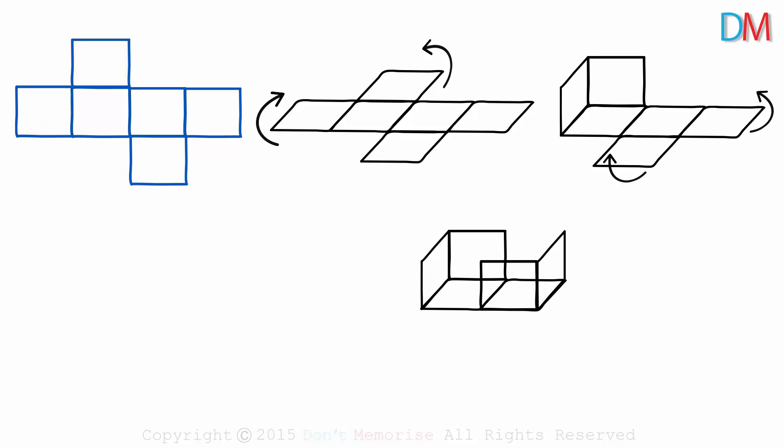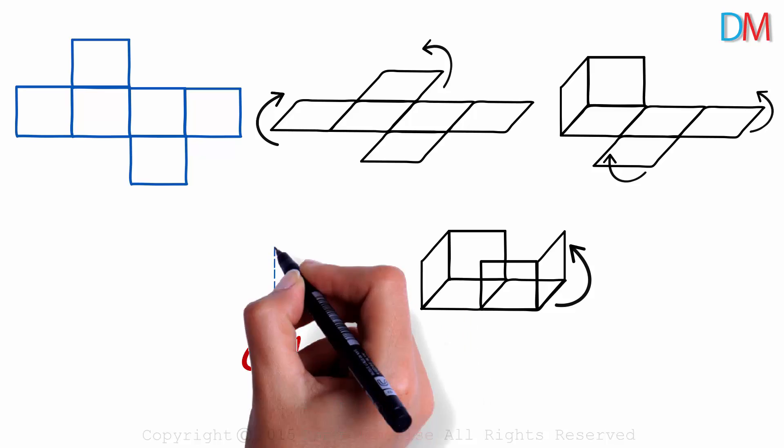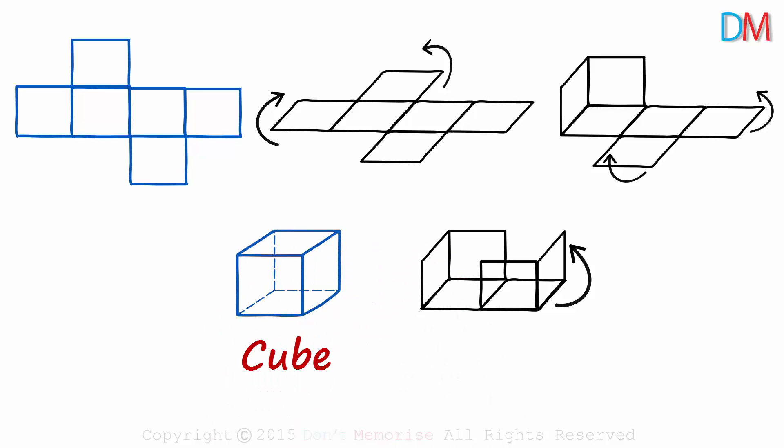Now if we just rotate this section towards the left, can you tell me what solid we will get? Yes, we will get a cube. A cube which will look like this. Remember, all the faces were squares, and the net was folded in such a way that we got a cube. So here we converted a net to its solid.